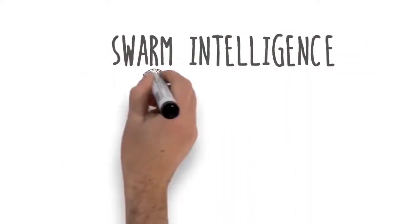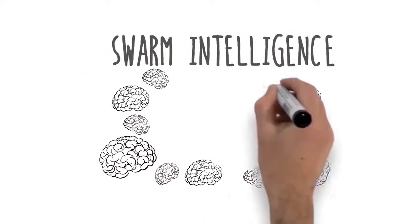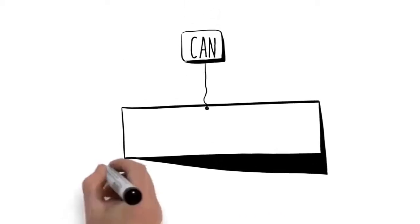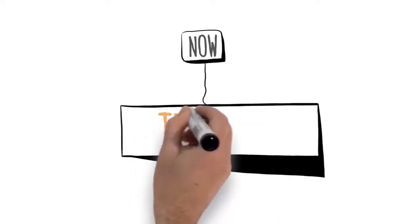Scientists call this swarm intelligence, and it combines the power of many minds into one. The question is, can people swarm? Now they can.